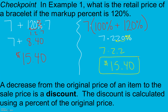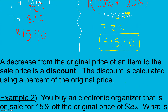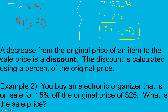So here are two ways — you don't need to do them both, just one. Find whichever one you're more comfortable with. A decrease from the original price of an item to the sales price is a discount. The discount is calculated using a percent of the original price.